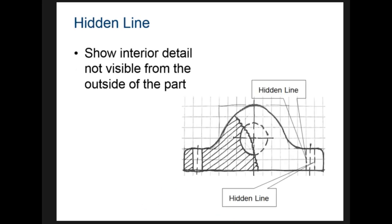Hidden lines represent something that I can't actually see from the front. For instance, on this piece there's a hole in there but I can't see it from this front view. They're dashed to show that they're back in there and you can't actually see them on this part.